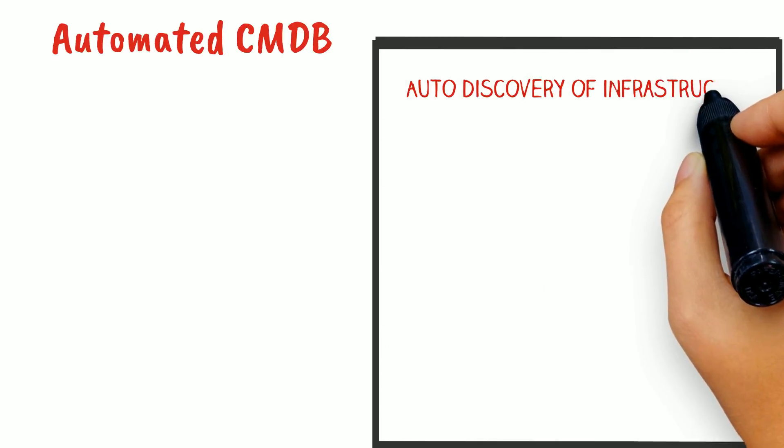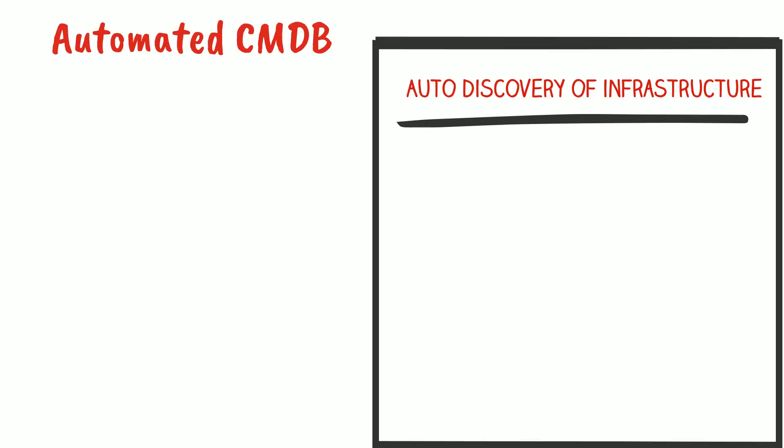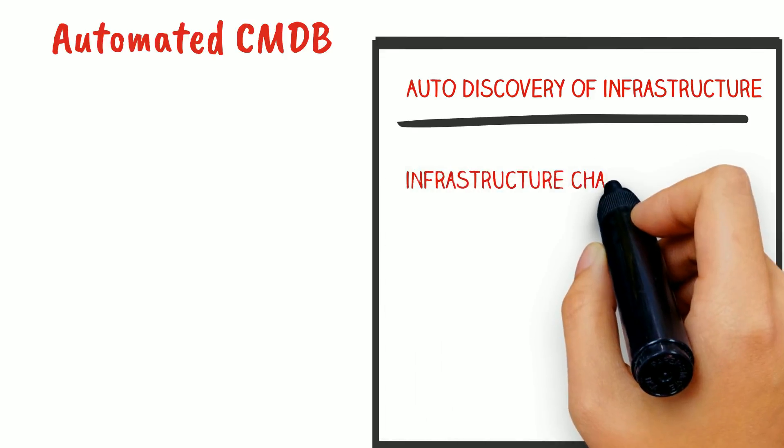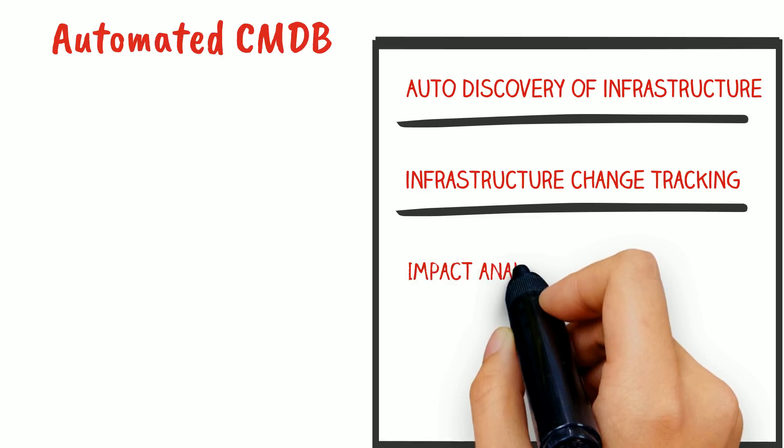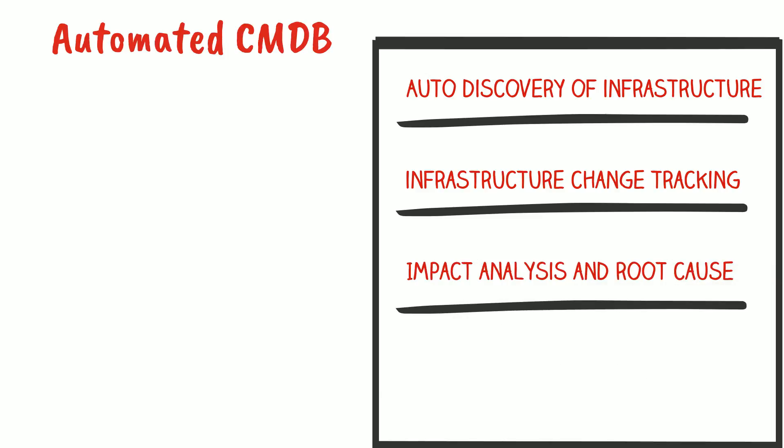By using automated discovery to continuously inspect, update, and report on your environment, your inventory tracking is always up to date. By detecting all the changes in your IT infrastructure, only authorized changes will be implemented, while unauthorized changes can be further evaluated. With the help of the application dependencies created by an automated CMDB, impact analysis scenarios can be used to assess weak points in your infrastructure and calculate the root cause of infrastructure or application failures.